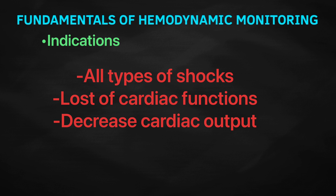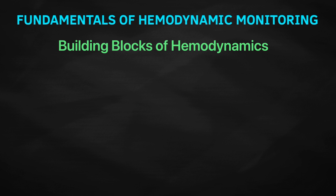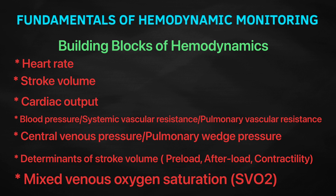Knowing how circulation works and those hemodynamic monitoring goals, measurements, and indications is not enough. The critical care nurse should recognize and understand the building blocks of hemodynamics. These building blocks include heart rate, stroke volume, cardiac output, blood pressure, systemic vascular resistance, pulmonary vascular resistance, central venous pressure, pulmonary wedge pressure, and the determinants of stroke volume — preload, afterload, and contractility — as well as mixed venous oxygen saturation.